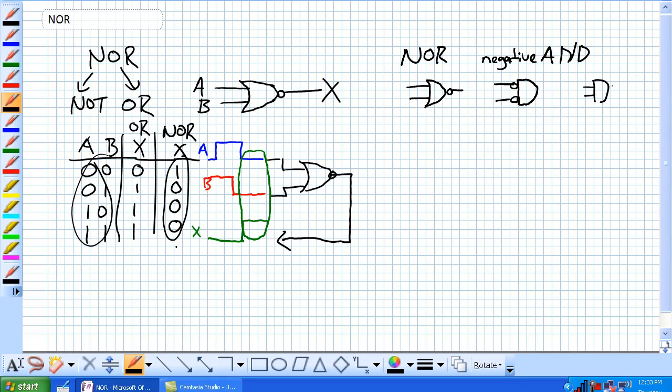So NOR equals negative AND, which is distinctly different from a NAND, because remember, our NAND looks like this with a negation bubble on the output. That is not equal to a negative AND, and we'll show you at the very end why that is true. How does a negative AND work versus a NOR? Absolutely the same.